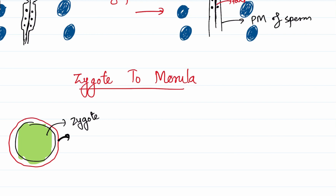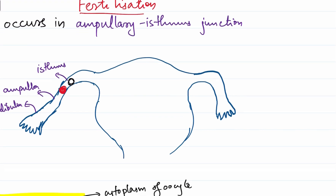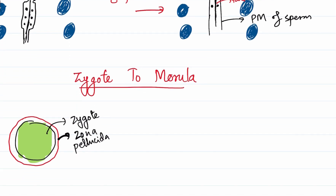This zygote is surrounded by the zona pellucida. The zona pellucida has an important role: it inhibits implantation — that is, it prevents the zygote from penetrating the endometrium, thereby preventing implantation.